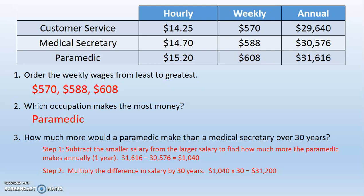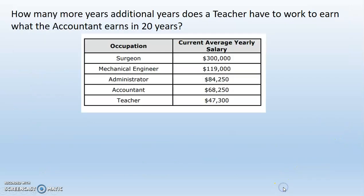There's another way to do this question: you can multiply each annual salary by 30 years first and then subtract. It doesn't matter which way, as long as you get that difference and that multiplication in there.